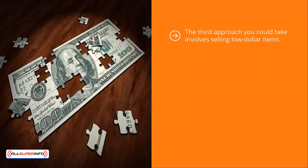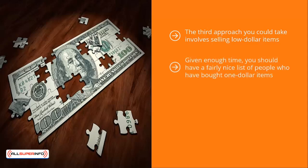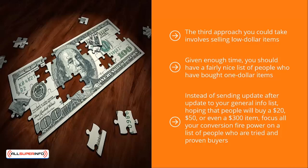The third approach involves selling lower dollar items. You start with your general list and send updates promoting a one-dollar product. When people buy these one-dollar items, they end up on your buyer's list and are automatically unsubscribed from your main list. Given enough time, you'll have a nice list of proven buyers. Focus most of your time crafting high-converting updates that target your buyer's list. Instead of sending updates to your general list hoping people will buy a $20, $50, or $300 item, focus your conversion efforts on tried and proven buyers.